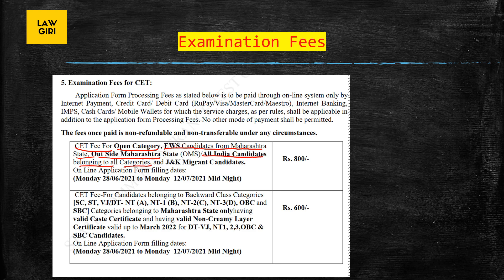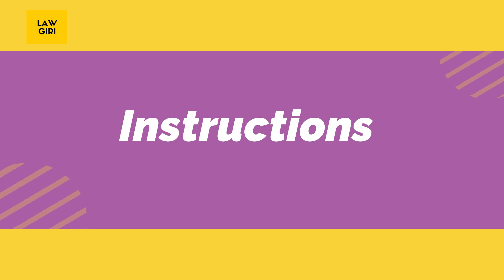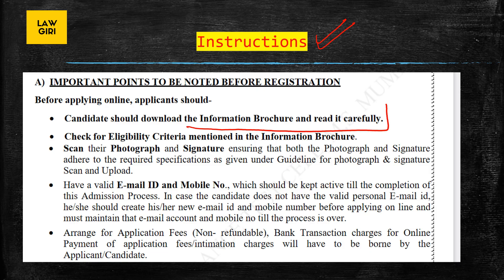Let's check the examination fees. The CET fee for open category, EWS category, candidates from Maharashtra state, outside Maharashtra state, and all-India candidates belonging to all categories is ₹800. For reserved categories from Maharashtra the fee is ₹600. Please read the information brochure carefully — I have provided the link in the description box.